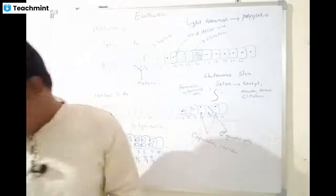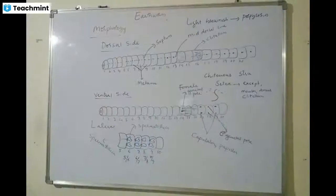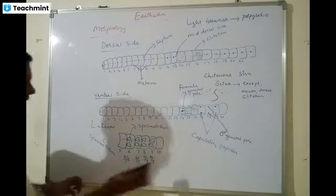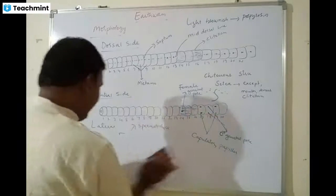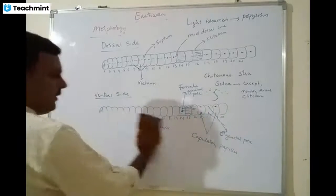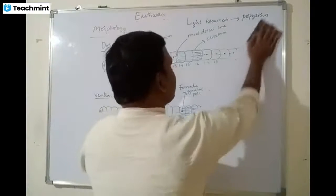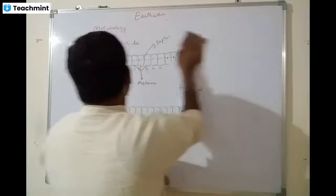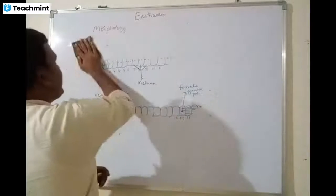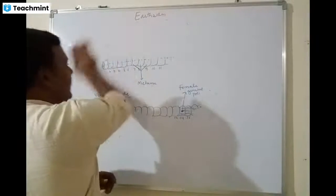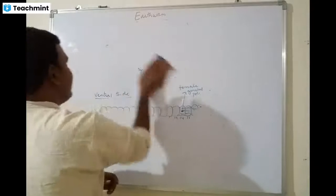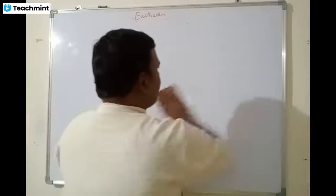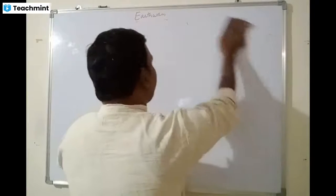Now we will start with internal anatomy and begin with the different systems. The first system is the digestive system. The digestive system is very well developed in the case of earthworms — it is a straight tube, similar to Nematohelminthes because it is a worm-shaped animal. The length of the earthworm and the alimentary canal is almost the same.